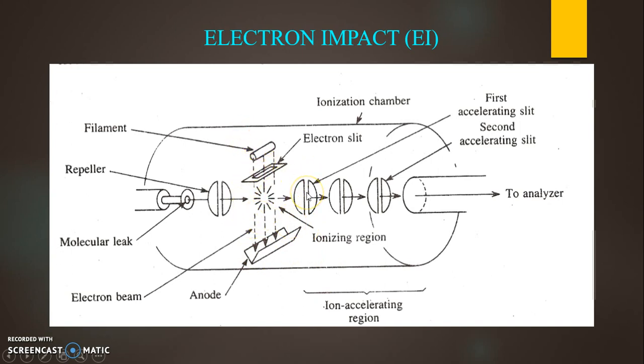This is the first accelerating slit and this is the second accelerating slit. From this the electrons or the ions will travel to the ionizer to the analyzer.